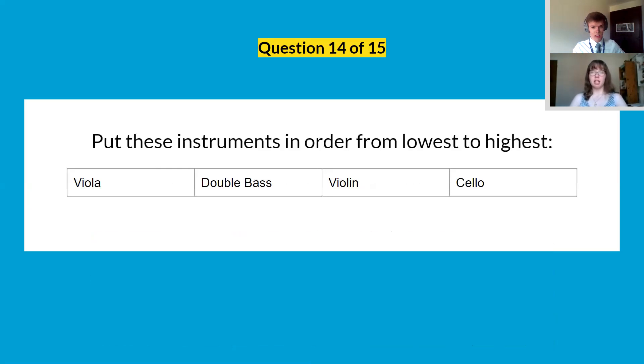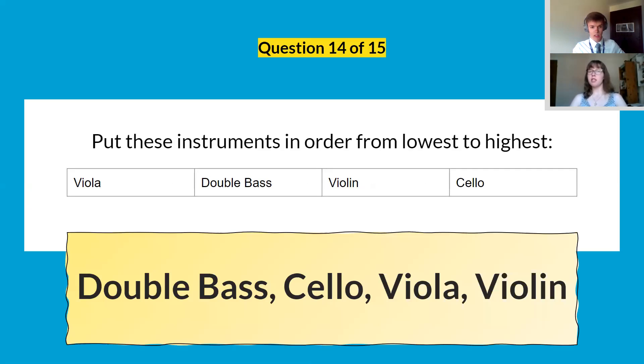Question fourteen, put these instruments in order from lowest to highest. The lowest is double bass and the cello, viola and violin.